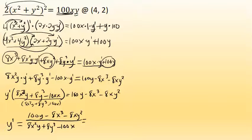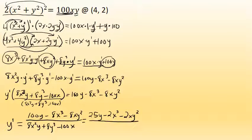It's worth noting that there is a common factor of 4 in the numerator and the denominator, and if I reduce both by that factor, I'll have the derivative in simplest form: y prime equals (25y − 2x³ − 2xy²) all over (2x²y + 2y³ − 25x).